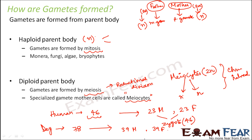To summarize: wherever your parent body is haploid and your gametes are also haploid, you do not want to change the chromosome number, so it has to be mitosis — the equational division. On the other hand, if you have a diploid parent body and you want to reduce the chromosome number to half, you use meiosis. That is how gametes are formed inside the body.